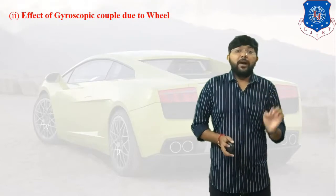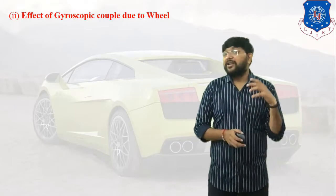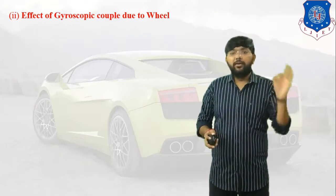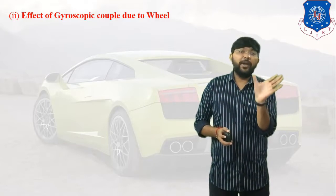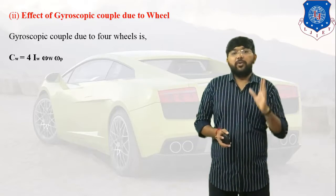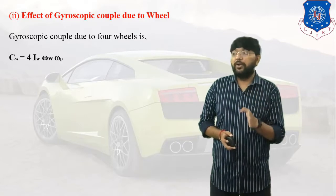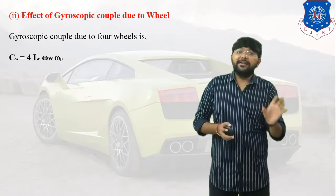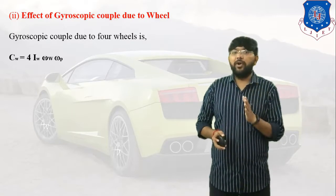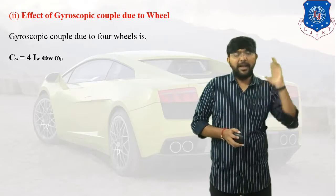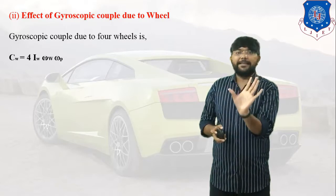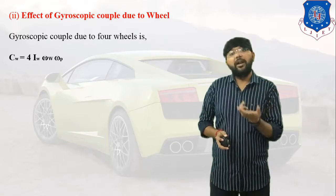Second: effect of gyroscopic couple due to the wheel. The equation of reactive gyroscopic couple is I·ω·ωp, but since the car has four wheels, we multiply this equation by four. So the reactive gyroscopic couple due to the wheel is: Cw = 4·Iw·ωw·ωp, where Iw is the mass moment of inertia of the wheel, ωw is the angular velocity of the wheel, and ωp is the angular velocity of the axis of precession.